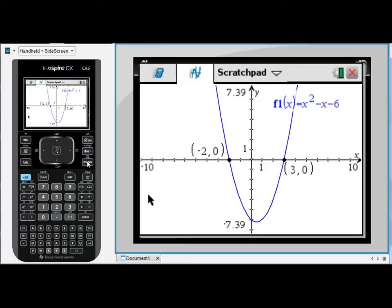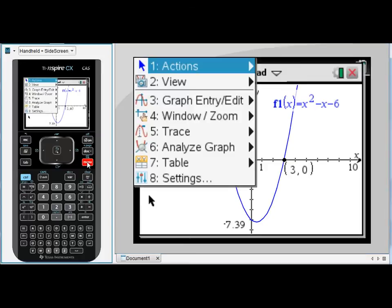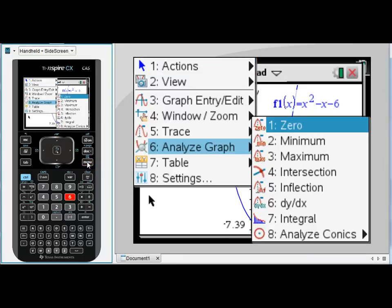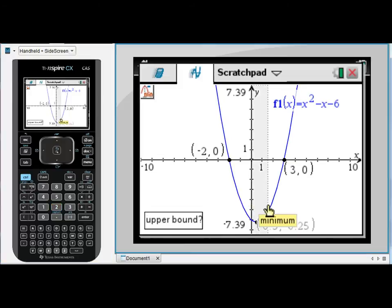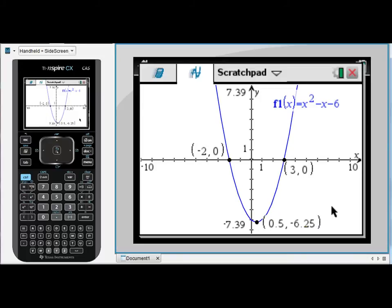The other thing I'm interested in here is that minimum turning point. So menu 6 for Analyze Graph, and this time we're looking at 2 for minimum. Again, it asks me for a lower bound and an upper bound. I just need to scroll somewhere to the left of the minimum and somewhere to the right of the minimum. It will place a point with coordinates, and you can move that point around if you wish.